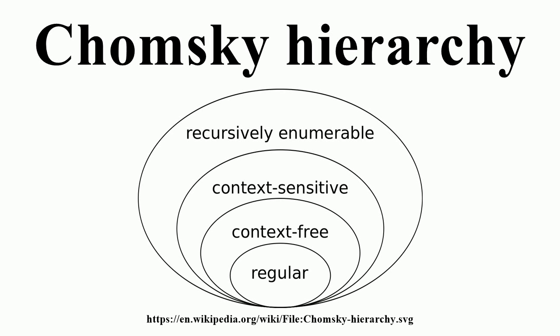Type 2 grammars generate the context-free languages. These are defined by rules of the form with a single non-terminal on the left and a string of terminals and/or non-terminals on the right. These languages are exactly all languages that can be recognized by a non-deterministic pushdown automaton. Context-free languages, or rather the subset of deterministic context-free languages, are the theoretical basis for the phrase structure of most programming languages, though the syntax also includes context-sensitive name resolution due to declarations and scope. Often a subset of grammars is used to make parsing easier, such as by an LL parser.